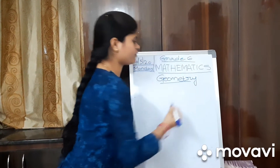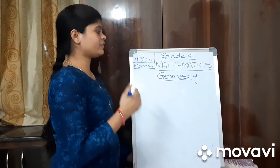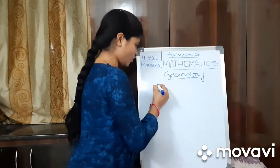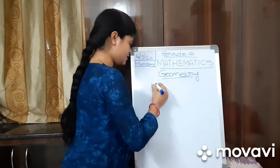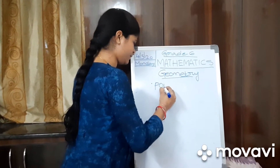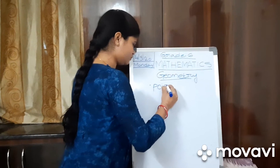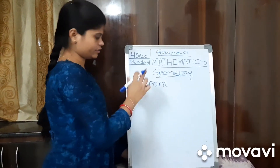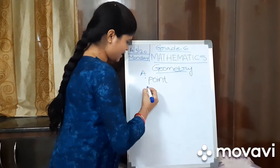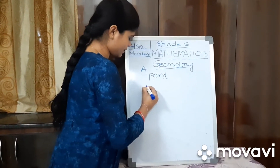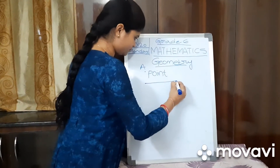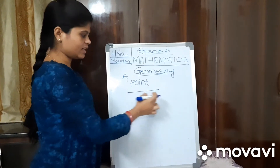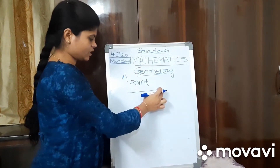The first thing we face in Geometry is a point. This is a point. A point is a dot. Next, line segment. This is a line segment. A line segment starts with a point and ends with a point.